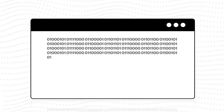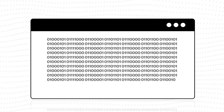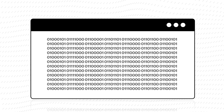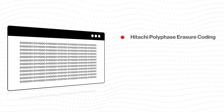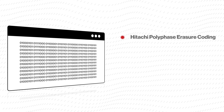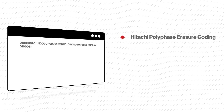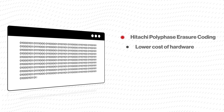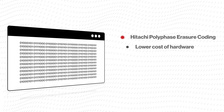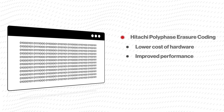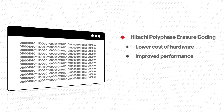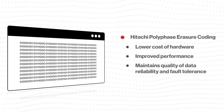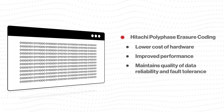VSS Block takes advantage of Hitachi Polyphase Erasure Coding, which is a Hitachi patented technology for cluster data reliability and fault tolerance, like conventional hardware RAID technology. As a result, you can reduce the cost of your hardware resource investment while improving performance with high-speed read processing, without compromising the quality of data reliability and fault tolerance.